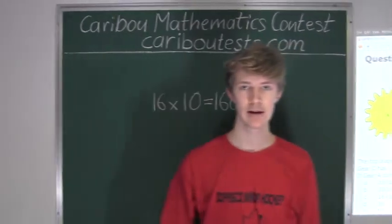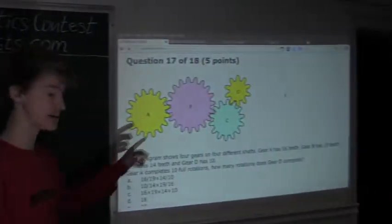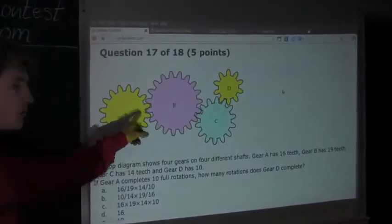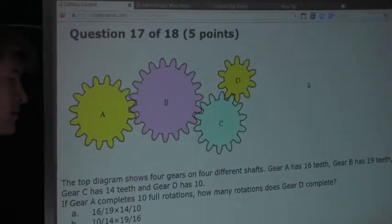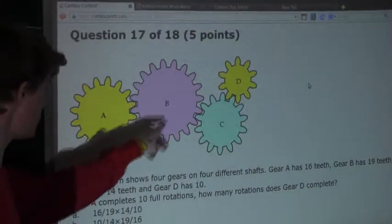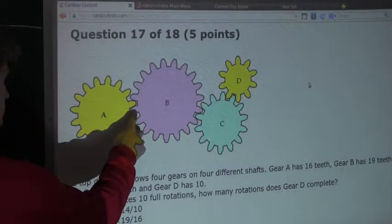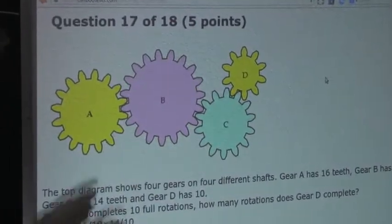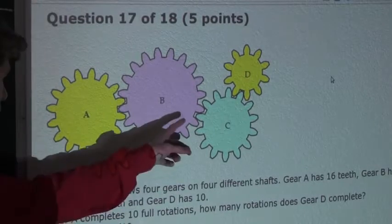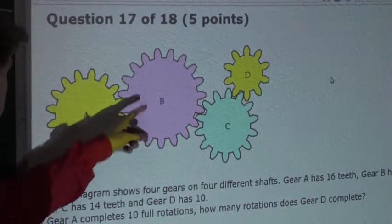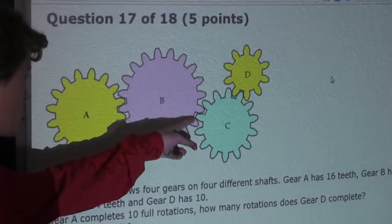Therefore we know 160 teeth of gear A pass this point. And since we know that, we also know that 160 teeth of gear B also pass this point. And since we know that this is a solid gear, that means that 160 teeth of gear B must pass this point here.